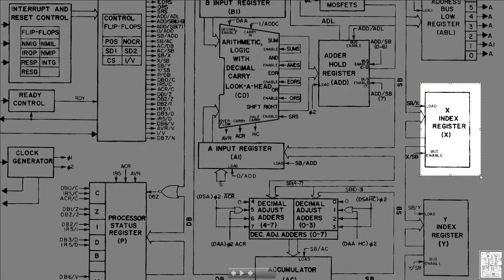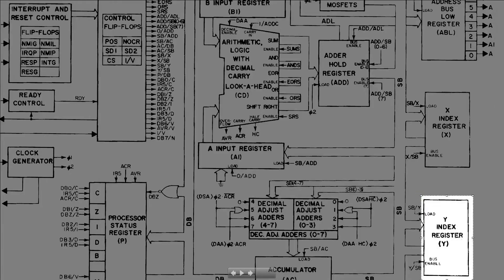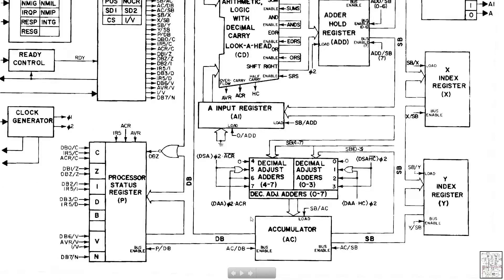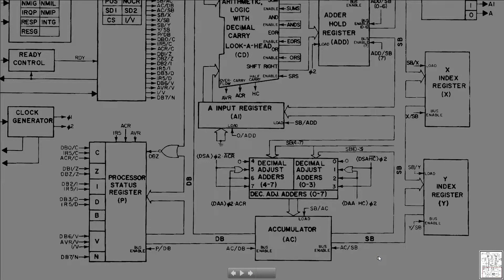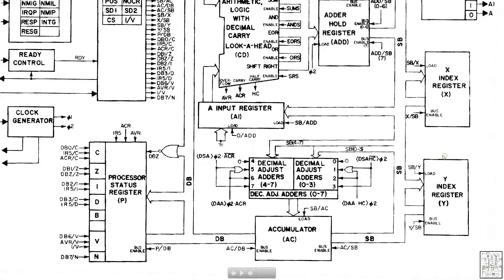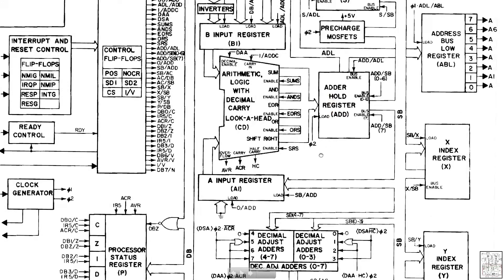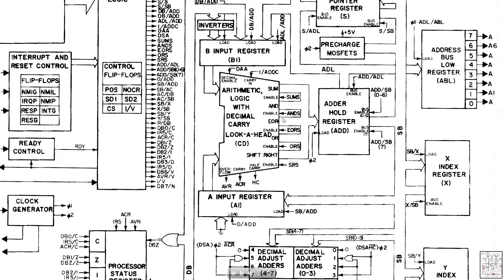Here you have register X, register Y, and the accumulator. These are the three major registers that we use. As you can see, all of them are connected on this bus — X, Y, and the accumulator go all over here, and it goes directly into your input and into your ALU.